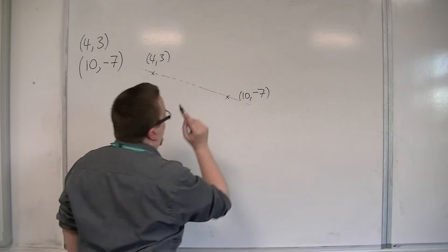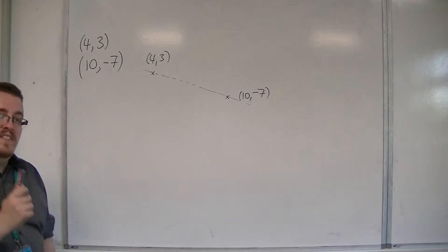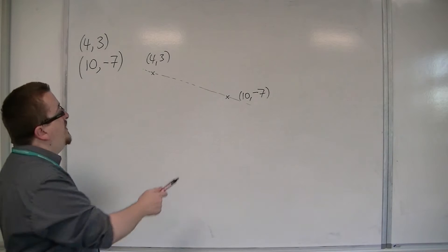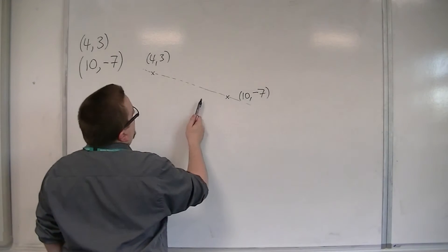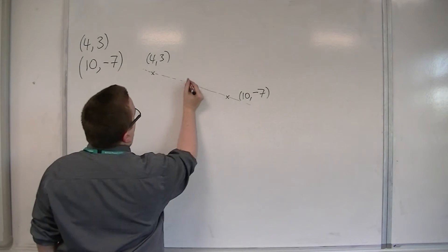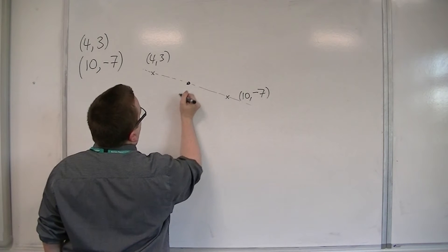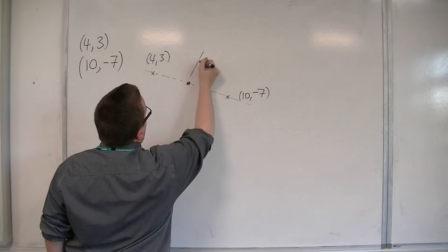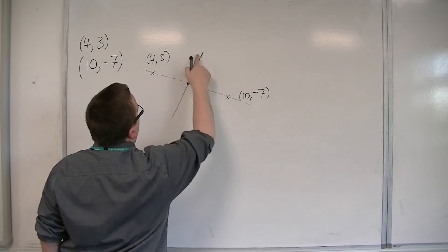We want the line, the perpendicular bisector, the line that is perpendicular to this one. Sorry, let's try that again. There we are.